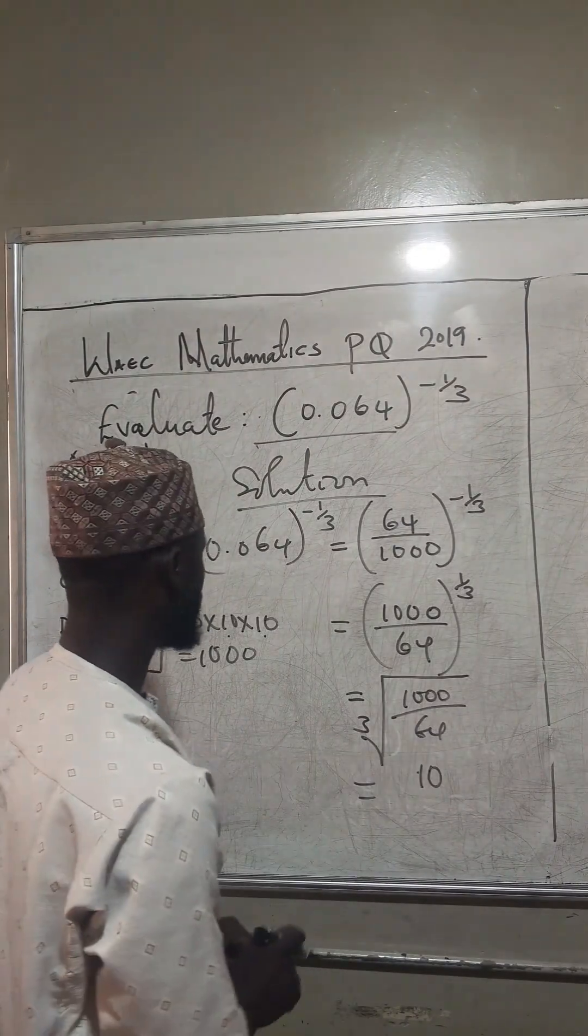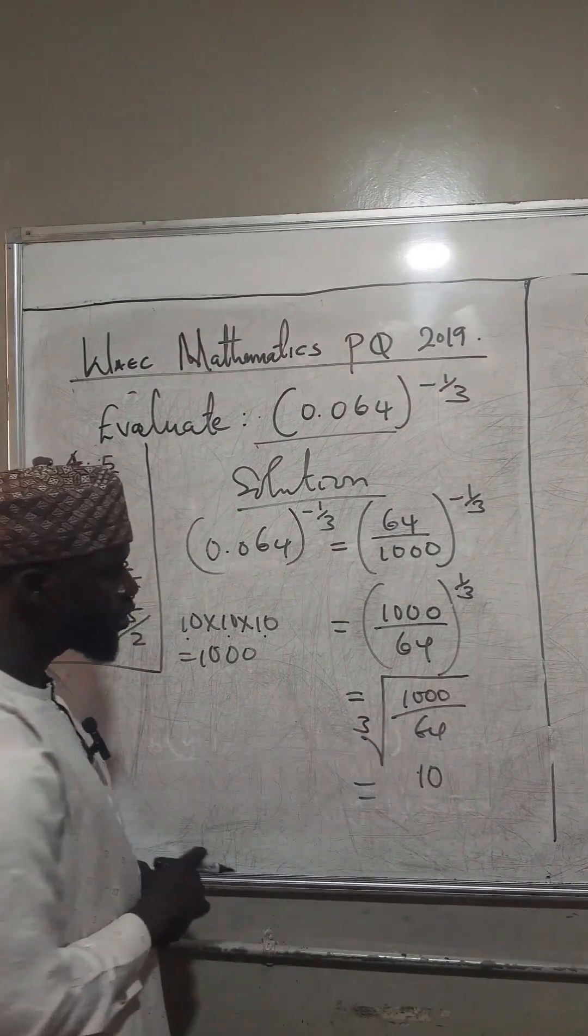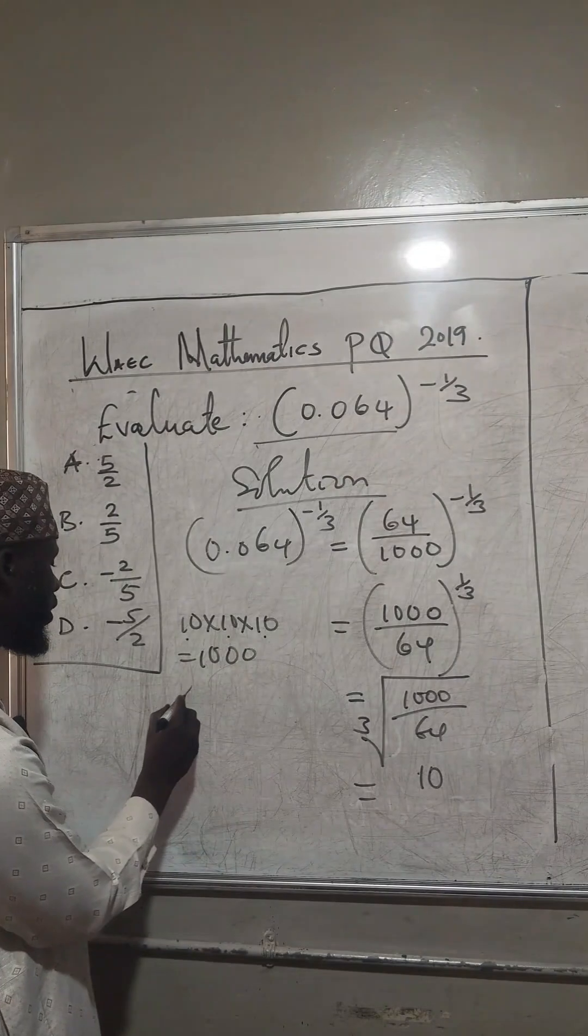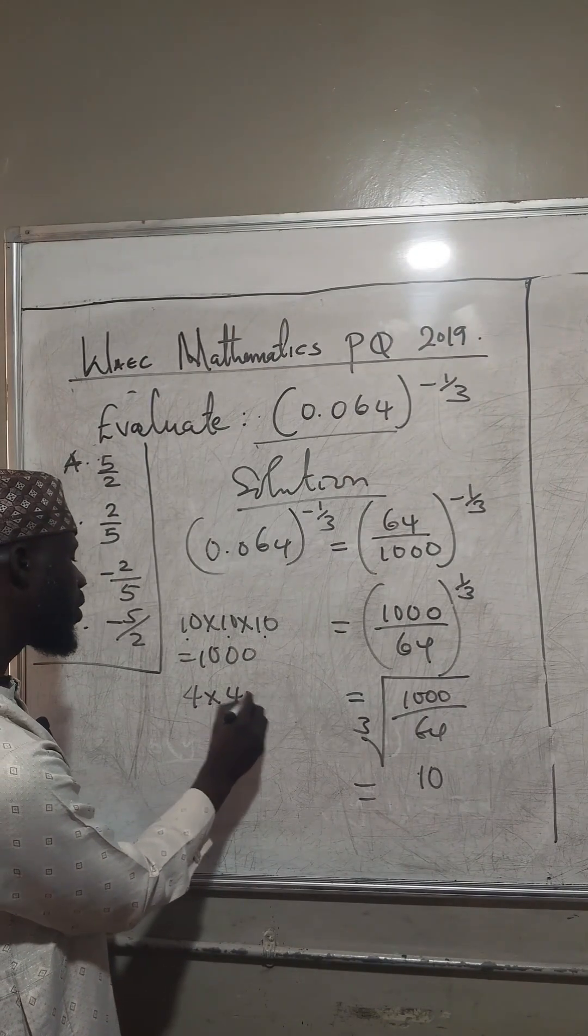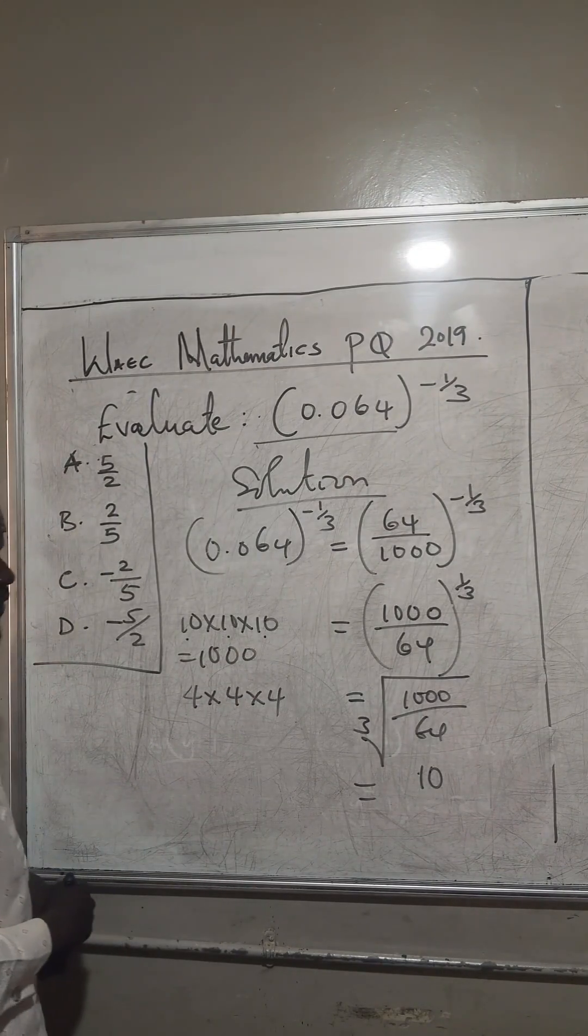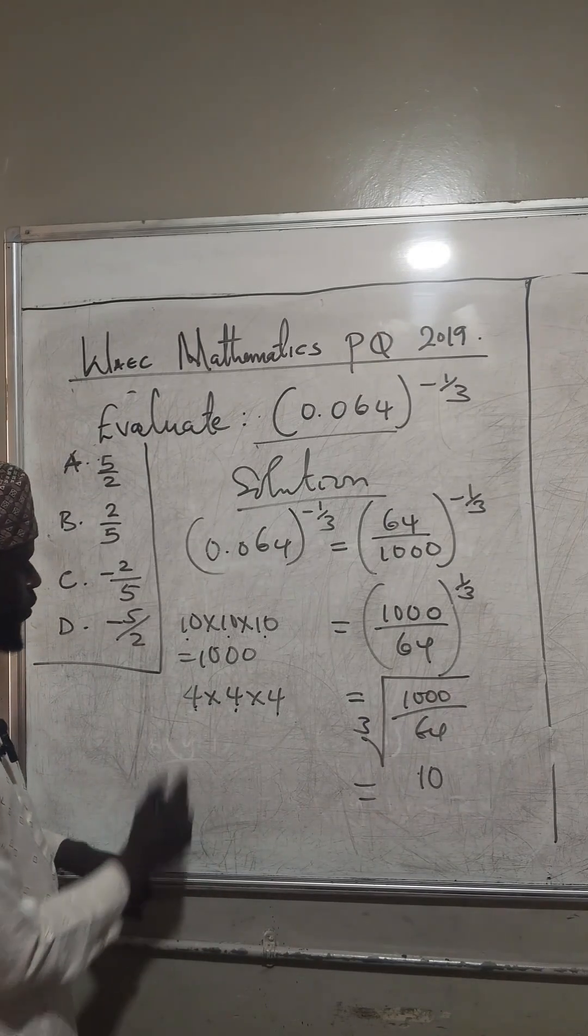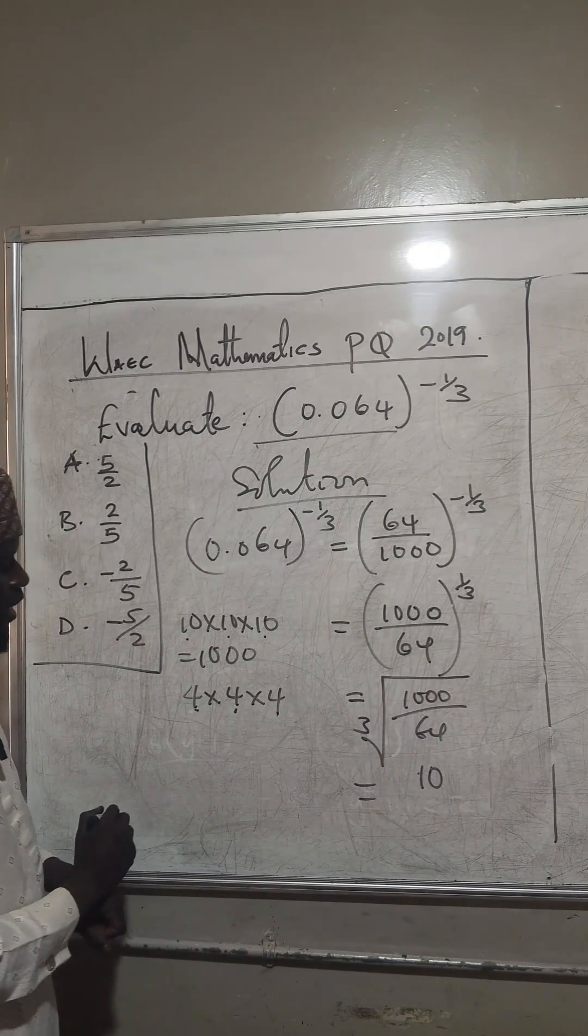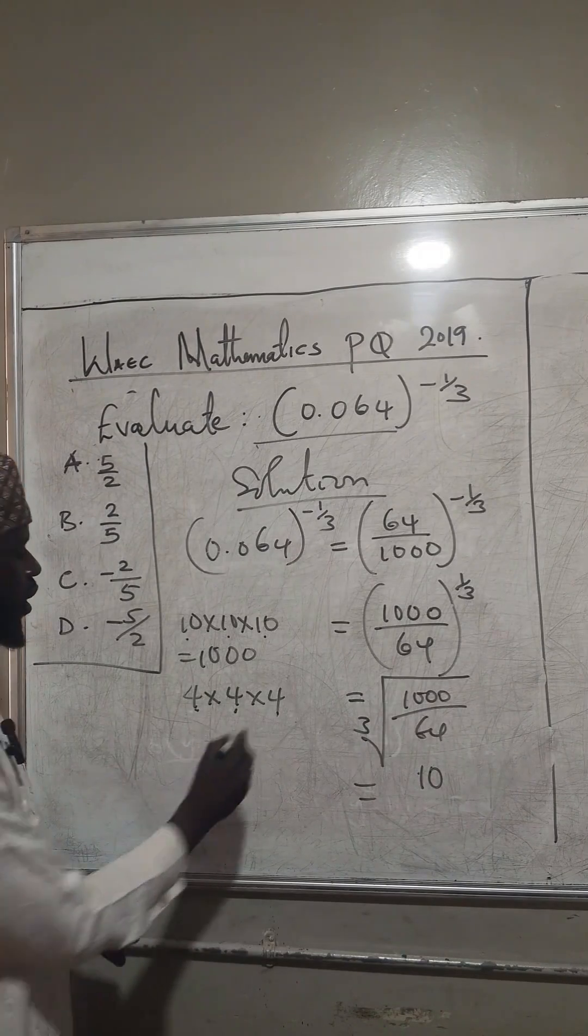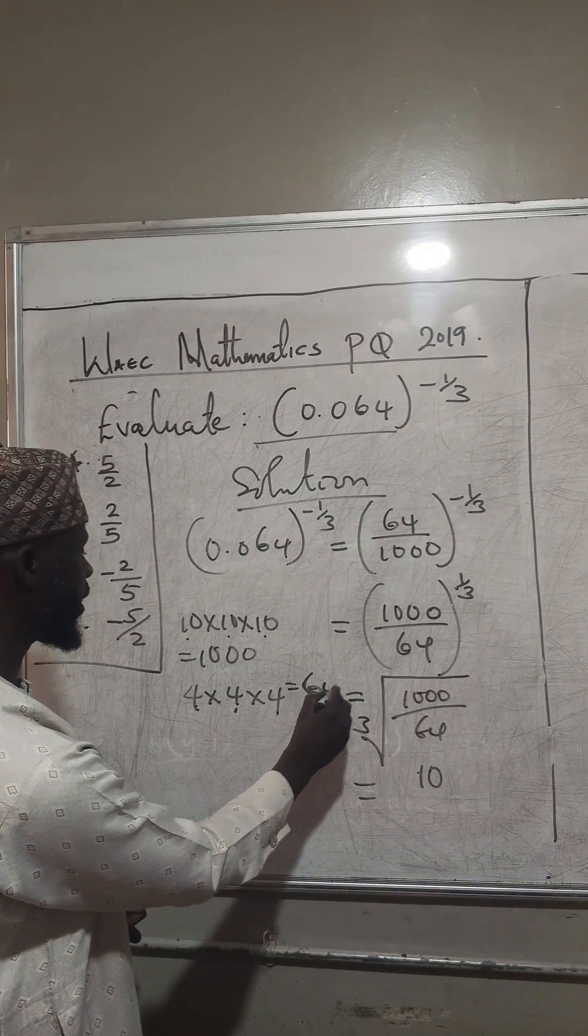You have 64. The cube root of 64 is 4. Because if you have 4 times 4 times 4, you have 64. 4 times 4, 16. 16 times 4 will give you 64. So 4 in three places will give you 64.